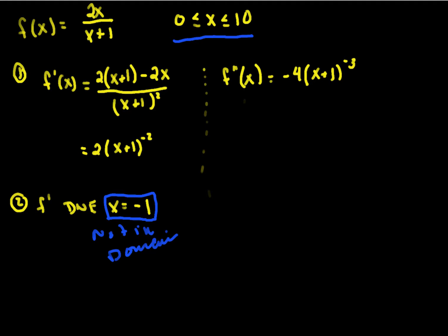How about the second derivative? Well, again, this is the second derivative, and just like the first one, this is never 0, and f double prime doesn't exist when x equals negative 1 again. Again, not in the domain.